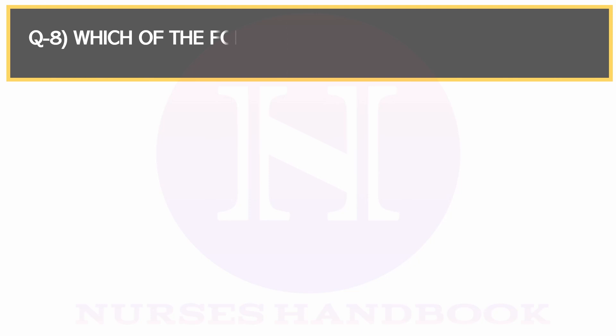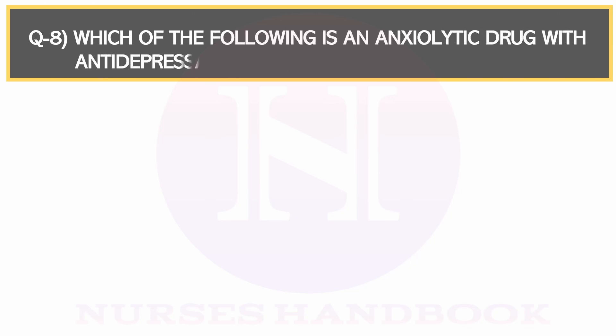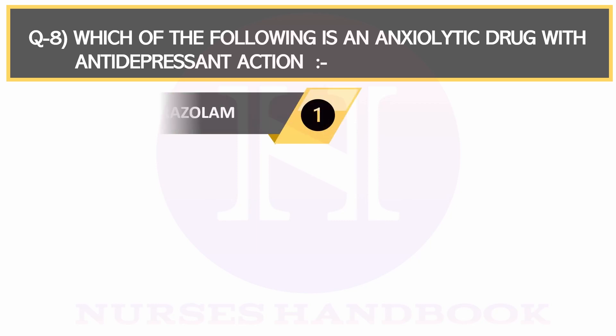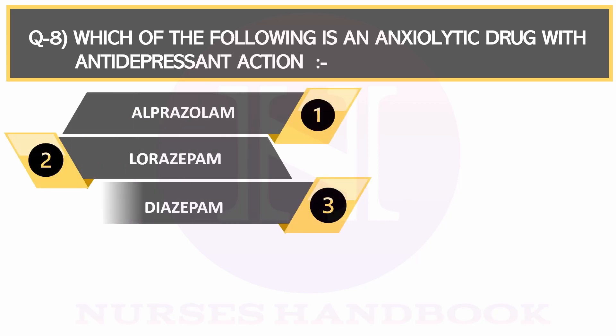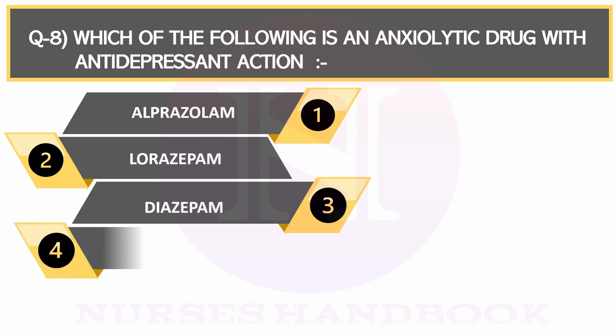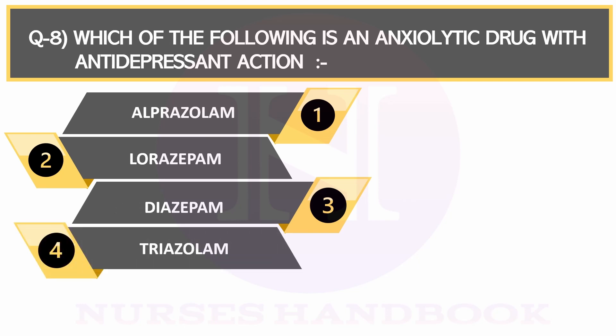Question number 8. Which of the following? An anxiolytic drug with antidepressant action is Option 1: Alprazolam, Option 2: Flurazepam, Option 3: Diazepam, and Option 4: Triazolam.